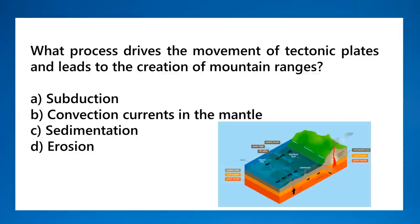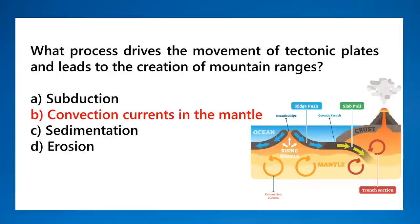What process drives the movement of tectonic plates and leads to the creation of mountain ranges? That is the convection currents in the mantle. Because of these convection currents, tectonic plates move and mountains and volcanoes are created. Remember that the mantle is the thickest layer of the Earth's interior — we have the crust, mantle, and core, with the mantle being the thickest.